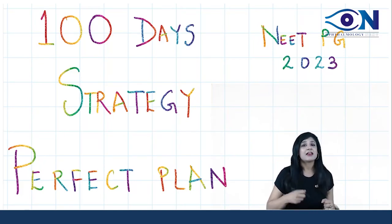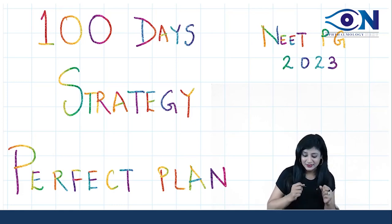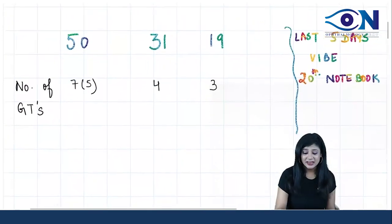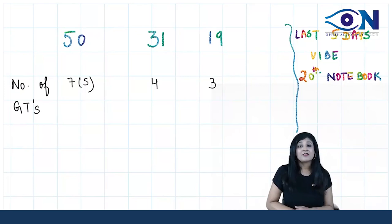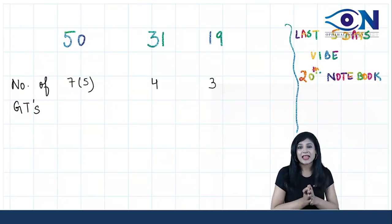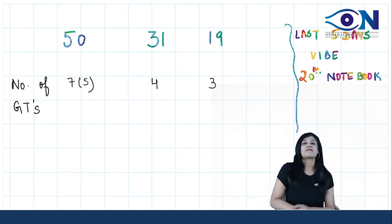Just listen to this plan, follow it, and you will see how magic can occur in these 100 days. See how to divide these 100 days - we have divided this into 50, 31, and 19. Why not 50, 30, and 20? Wait and be there with me till the end of the video and you will get to know how even one day matters.